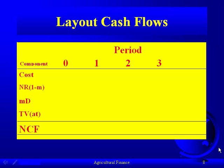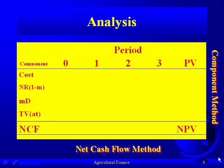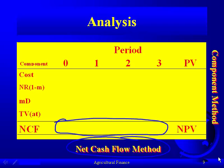The third step is the layout of cash flows. In our worksheet, we have the components: the cost, the after-tax net cash flow, the tax savings from depreciation, and the after-tax terminal value — which together equal the net cash flow. The fourth step is analysis: if we take the net cash flow in every period and find its present value, that's the net cash flow method. If we find the present value of each component and sum them up, that's the component method.